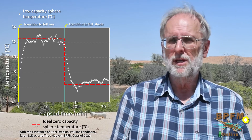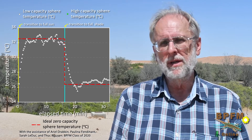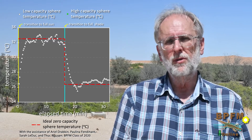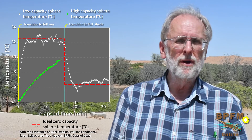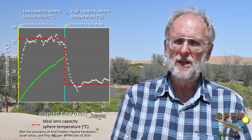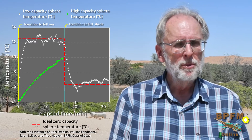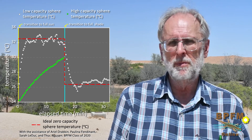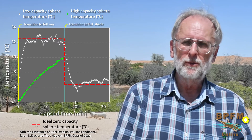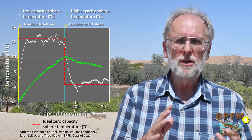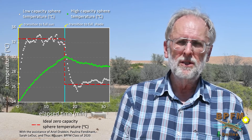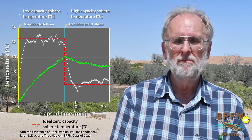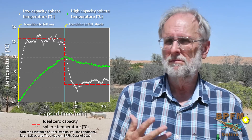Now, how about the high capacity ball, which we'll symbolize with these green diamonds? With the transition to full sun, temperature increases alright, but look how different is the time course of temperature change. The temperature change is gradual and smooth, with little indication of the rapid fluctuations we see in the low capacity ball. With the transition to full shade, we see a similar gradual and smooth decline of temperature. Clearly there's a radical difference between the temperature of the low capacity sphere and the high capacity sphere. What's going on?